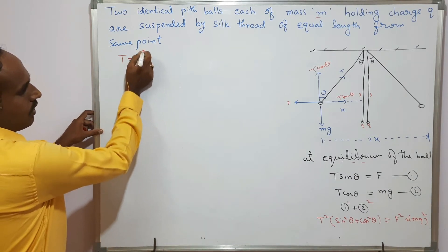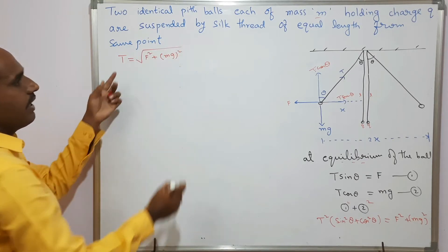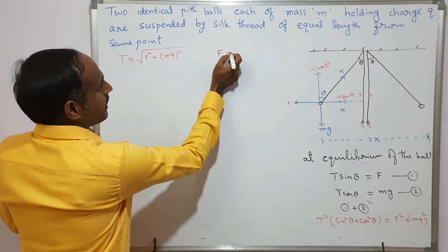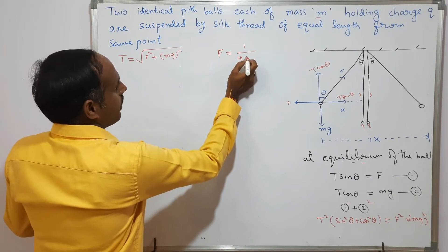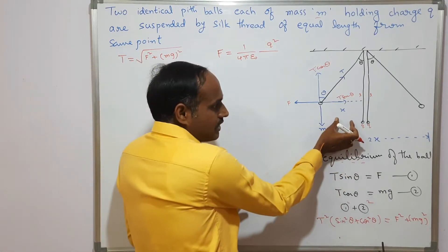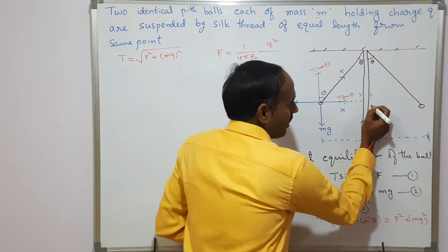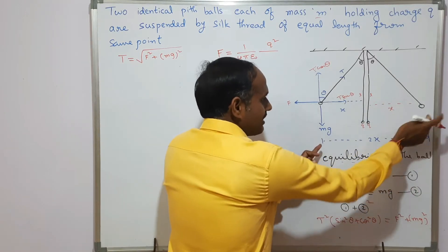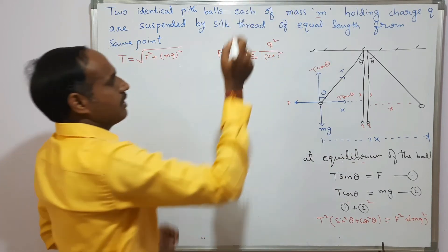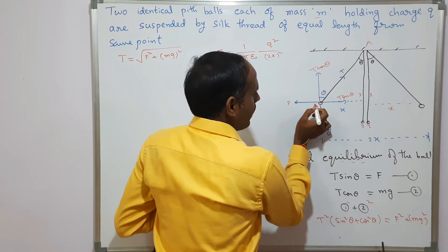This is the way we find the tension T. The force of repulsion between the two charges is F = (1/4πε₀) × q²/(2x)², where each charge is displaced a distance x from its mean position, so the net separation between the two charges is 2x. Thus (2x)² = 4x² appears in the denominator.